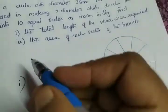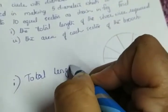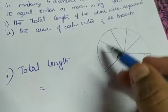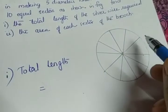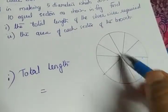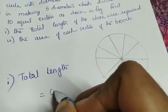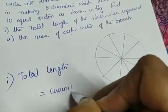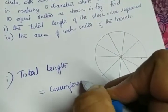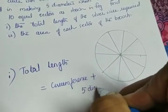The first question is to find the total length of the silver wire. Total length equals — whatever we see in the figure — the circle and 5 diameters. So total length equals circumference of the circle plus 5 diameters, which is circumference plus 5 times diameter.